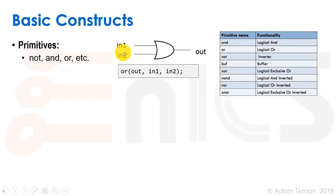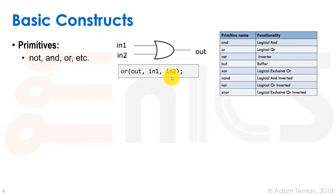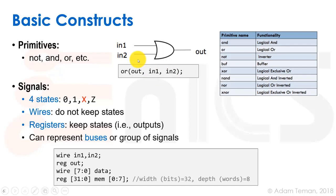Here's a full list of what we have. To write one of these, like this OR gate with inputs in1 and in2 and output out, we write the word 'or' with parentheses, then in order: the output, comma in1, comma in2, and a semicolon. That's not a wonderful way to describe an OR gate because we have to order the inputs — it's a very structural description and hard to read. So we won't use this much.